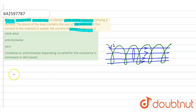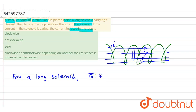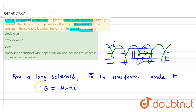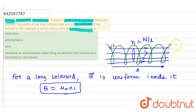For a long solenoid, the magnetic field is uniform inside it, and it can be given as B equals to μ₀nI, where small n is the number of turns per unit length. Here l is the length of the solenoid and for a long solenoid, l is greater than the radius.